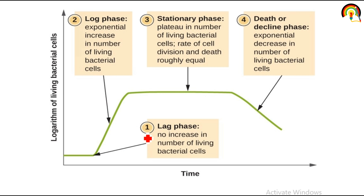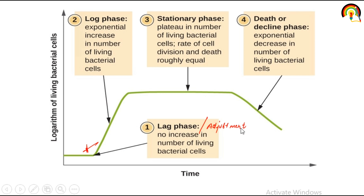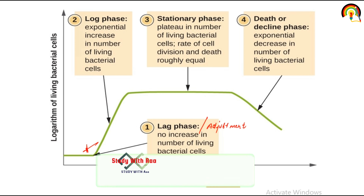The growth curve has four phases. First is the lag phase, where there is no increase in the number of living bacterial cells — also called the adjustment phase where bacteria adjusts itself to a new growth medium. Second is the log phase, also called the tropophase or exponential phase, where there is an increase in living bacterial cell number. Third is the stationary phase, a plateau where birth rate and death rate are roughly equal. Fourth is the death or decline phase, where there is an exponential decrease in living bacterial cells and the death rate is high.